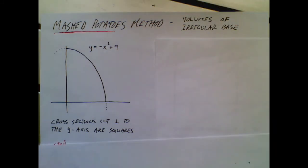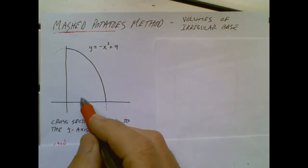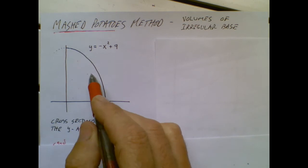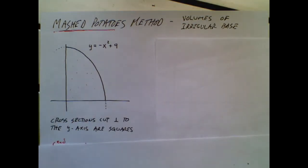There's a big difference between this one and the pancake and donut methods that you've recently learned, and that is this. In this problem, you still have a region, just like before, but now the region is not going to be rotated about the x or the y-axis or any other line.